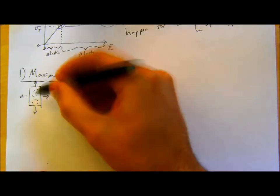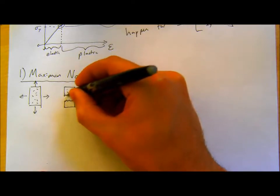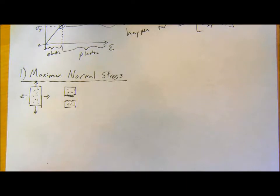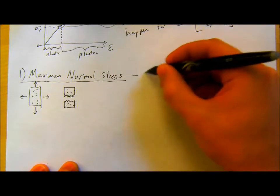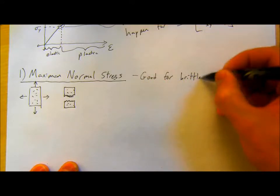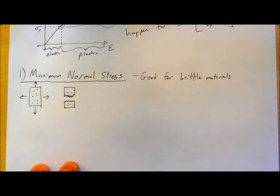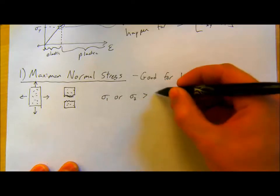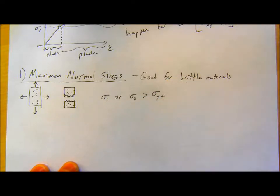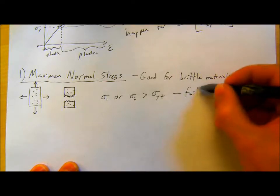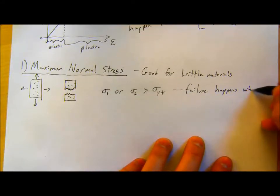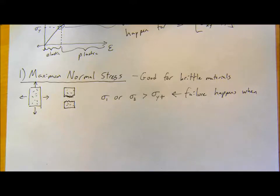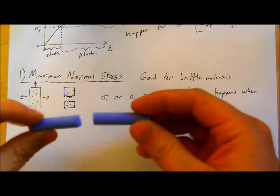In tension, this maximum stress criterion is good for brittle materials. We can say our failure criterion is just when σ1 or σ2 is greater than some yield strength in tension. Failure happens when we pass some yield strength in tension — there will be a big enough crack in there and it will cause failure. I intentionally chose a purple chalk instead of white chalk because they're normally more defect-prone — lower quality, so easier to break.